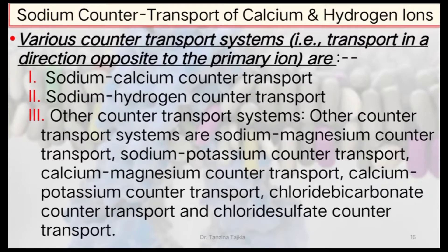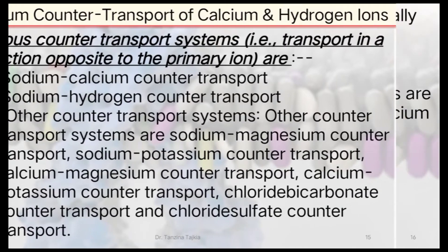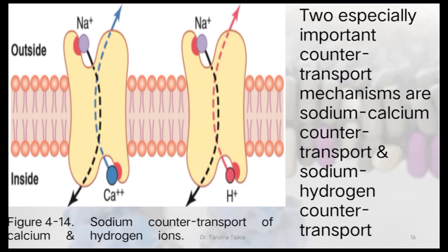Various counter-transport systems include: sodium-calcium counter-transport, sodium-hydrogen counter-transport, sodium-magnesium counter-transport, sodium-potassium counter-transport, calcium-magnesium counter-transport, calcium-potassium counter-transport, chloride-bicarbonate counter-transport, and chloride-sulfate counter-transport. Of these, the two especially important ones are sodium-calcium counter-transport and sodium-hydrogen counter-transport.